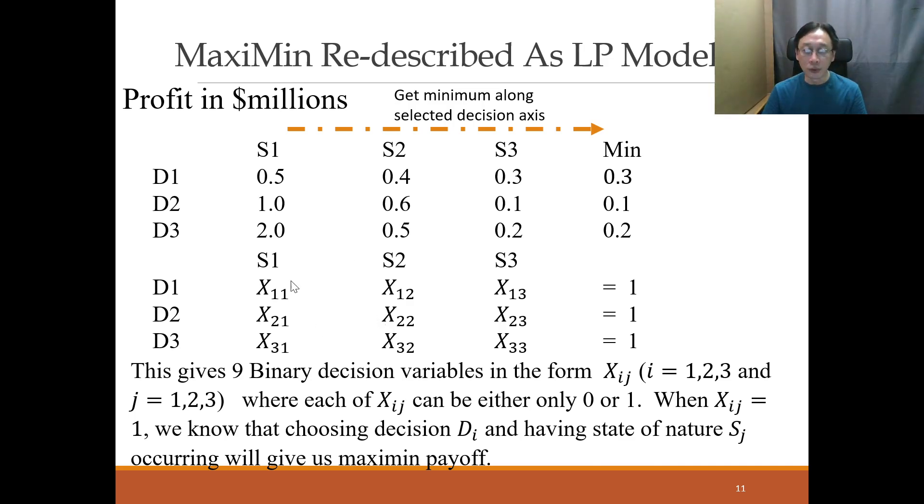Because in so doing, if we try to set it to 1, for example X22, after clicking solver, if X22 were to be 1, then we know that the maximum mean payoff is 0.6. If X13 happens to be 1, and of course all else must be 0, then we know that decision 1 and state of nature 3 will give us the maximum payoff. So that's the idea. And what we want to do, however, is that we want to ensure that after choosing each decision, because remember, Maximin has this requirement, this algorithm step where it says if we choose D1, then we will encounter a minimum amount.